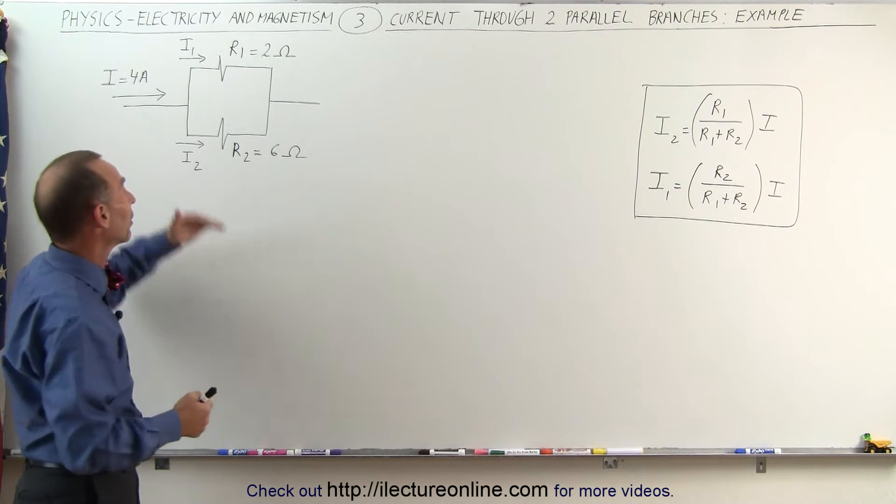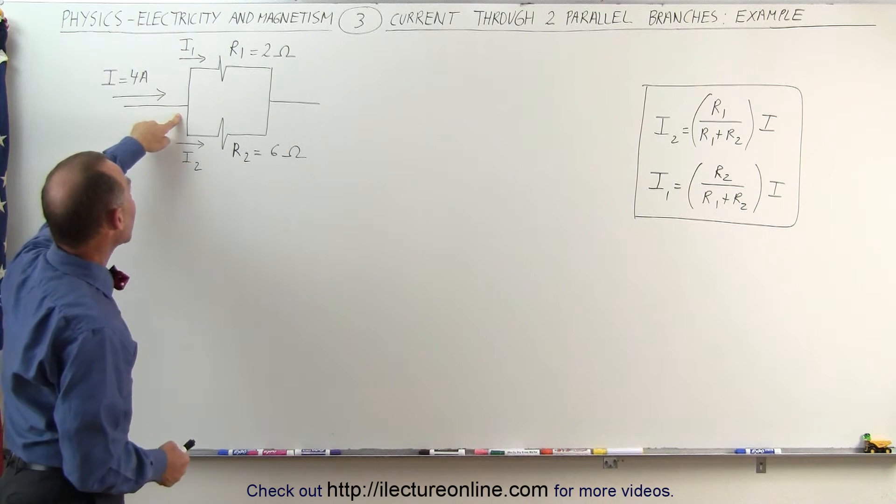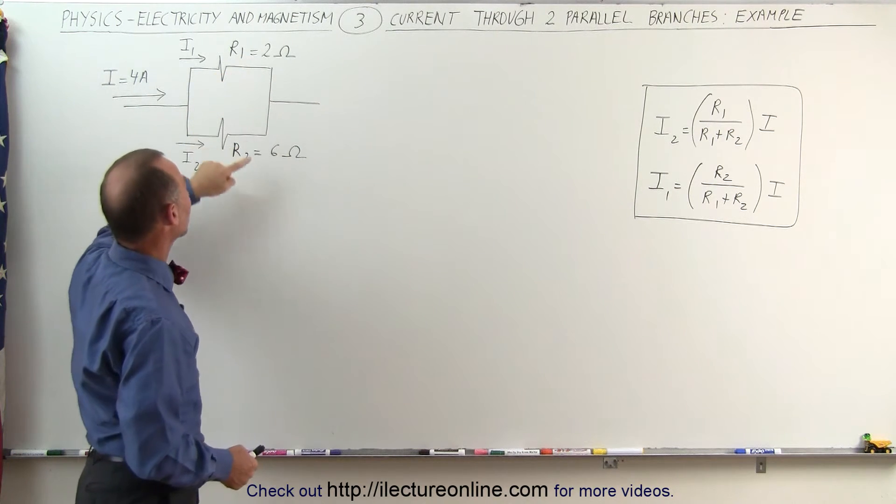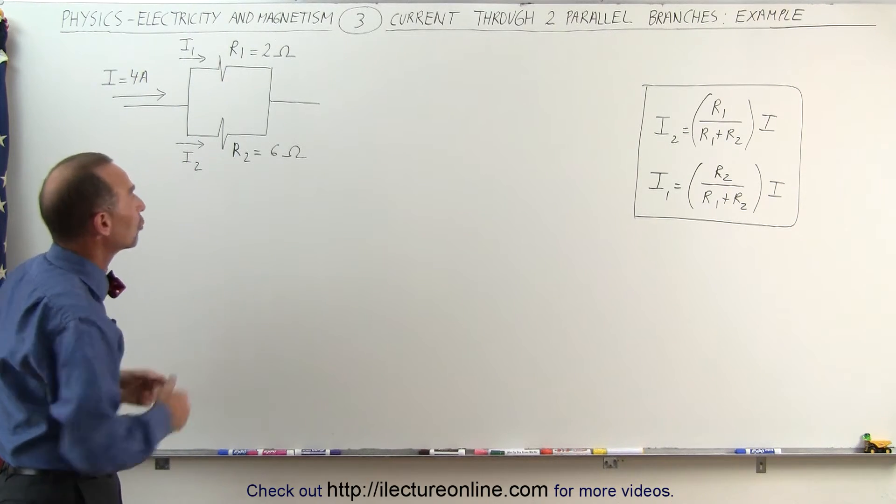There's only two branches here, one in the top, one in the bottom. The total current entering the branch point is 4 amps. We have 2 ohms in the top branch and 6 ohms in the bottom branch. How much current will flow through each of the two branches?